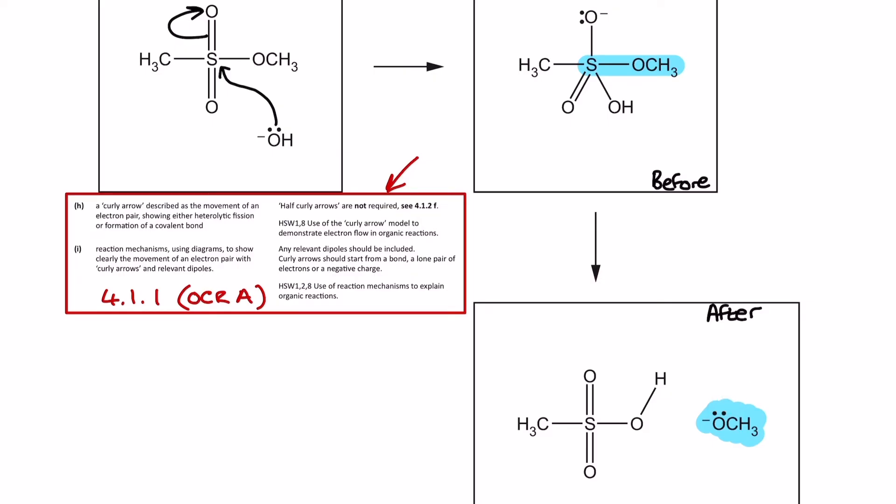The fact that that lone pair is being shown now is giving me a clue that the bond between the sulfur and the oxygen was broken in such a way that it requires a curly arrow.